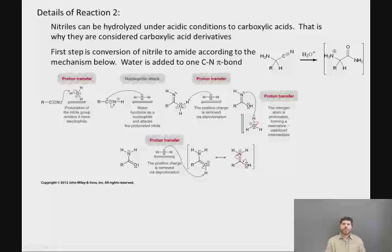So the first step is the conversion of the nitrile to an amide according to the mechanism below. So what is formally happening is that we are adding water to one of the CN pi bonds. We haven't added anything to triple bonds before, but as you can imagine, the carbon is the electrophilic partner in this bond and the nitrogen has the partial minus charge on it. So you can add nucleophiles to CN triple bonds just like you can add them to CN double bonds or CO double bonds.